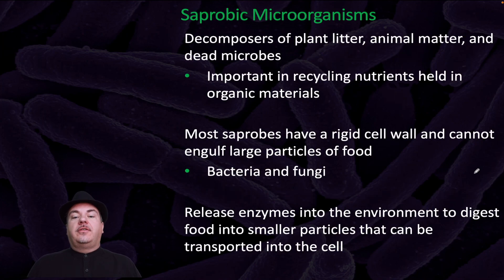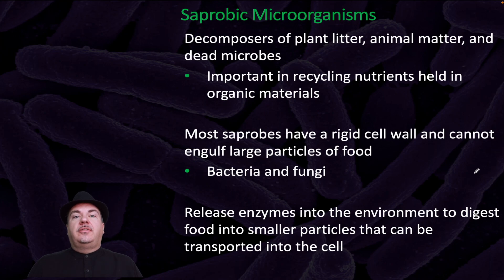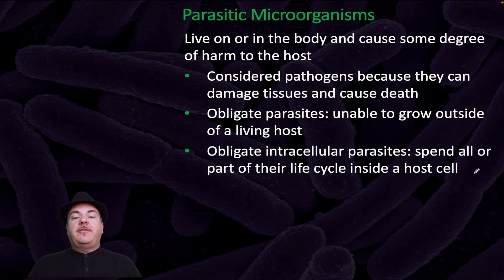Saprobic microorganisms are decomposers of plant litter, animal matter, and dead microbes, and are very important in recycling nutrients held in organic materials. Most saprobes have a rigid cell wall and cannot engulf large particles of food — they are bacteria and fungi. Since they can't engulf their food, they instead release enzymes into the environment to digest food into smaller particles that can then be transported into the cell. Parasitic microorganisms live on or in the body and cause some degree of harm to the host. They are considered pathogens because they can damage tissues and cause death. Obligate parasites are unable to grow outside a living host, and obligate intracellular parasites spend all or part of their life cycle inside a host cell.